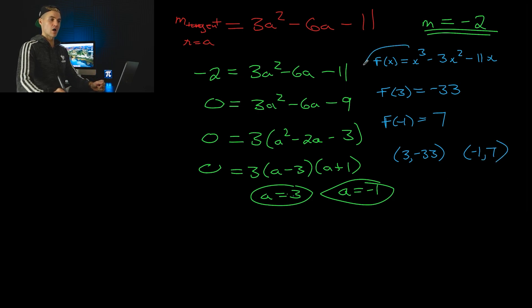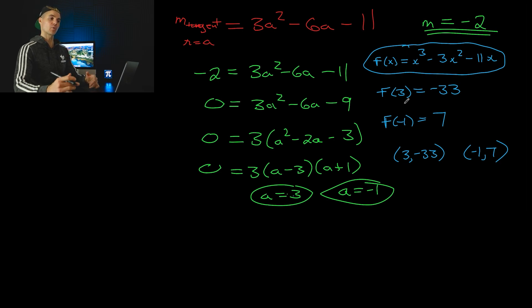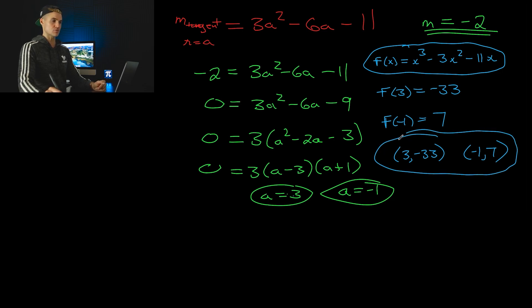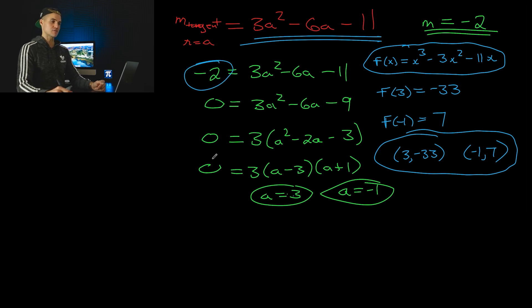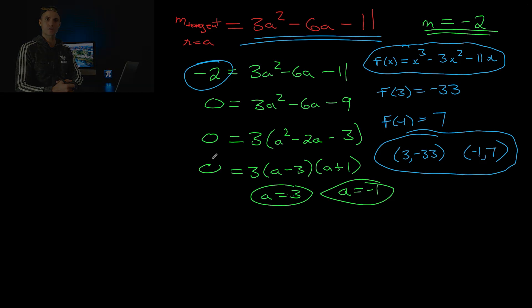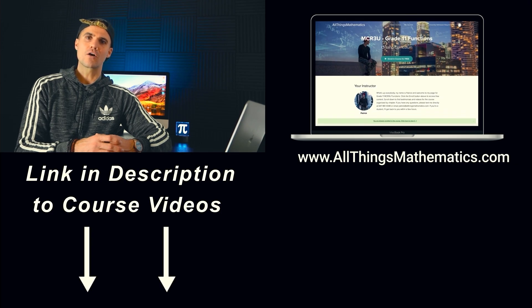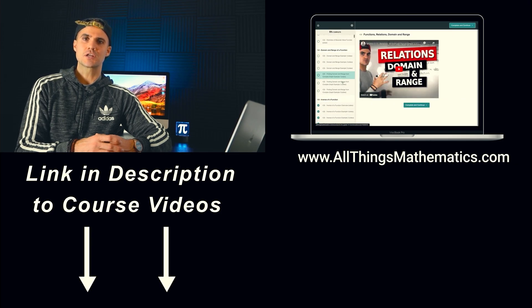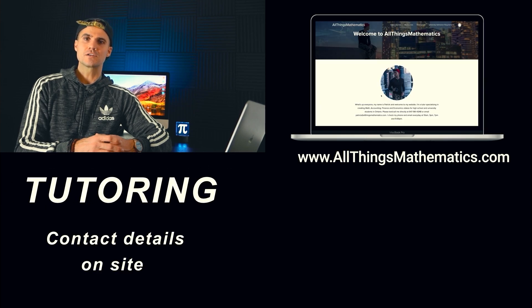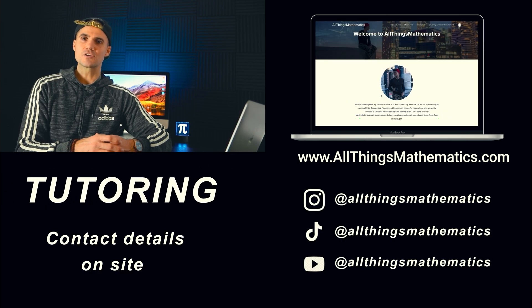So there are two coordinates on this function where the tangent has a slope of negative two, or where the tangent is perpendicular to the line with slope one half that was given in the question. We got the general expression for the slope of the tangent of this function, then found at what a values it equals negative two. That's a wrap for the question and the video. For more videos organized by chapter and section, visit allthingsmathematics.com. Enjoy your day, and I'll see you in the next one.